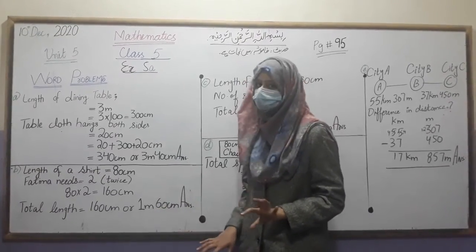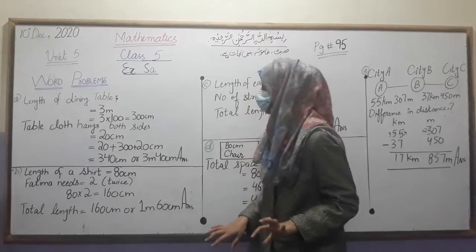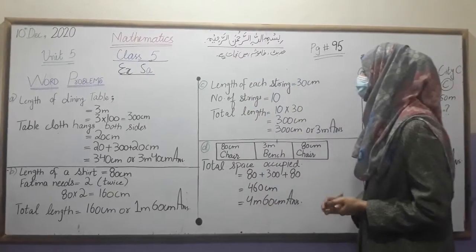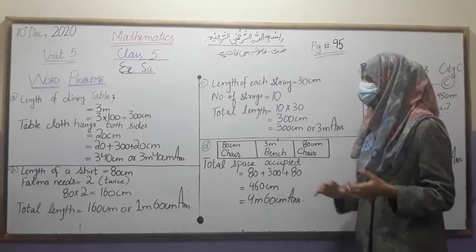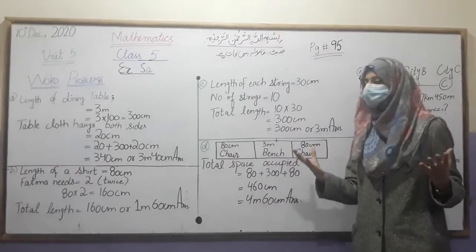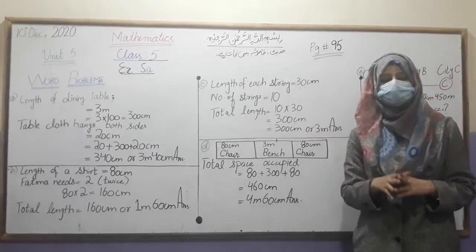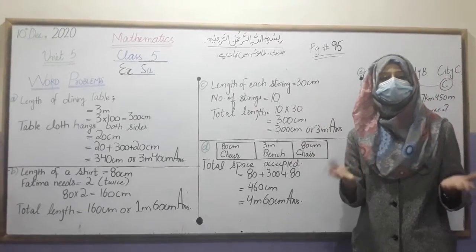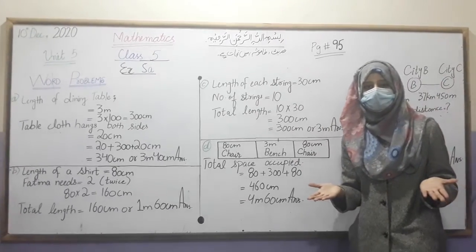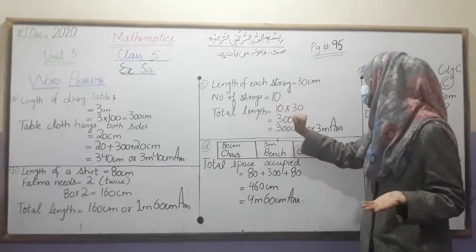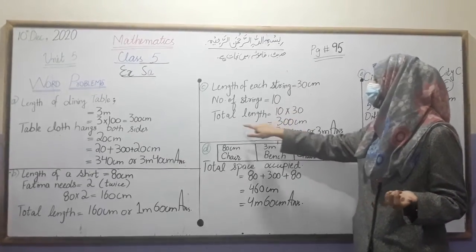Now part C. The length of a cutter rope is 30 meters. We have a number of strings — 10 strings, each 10 centimeters long.